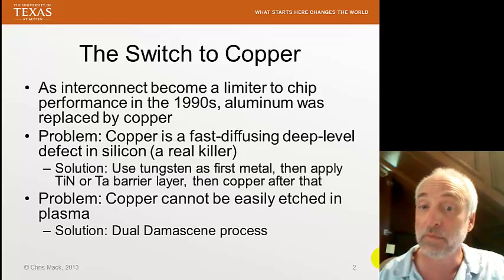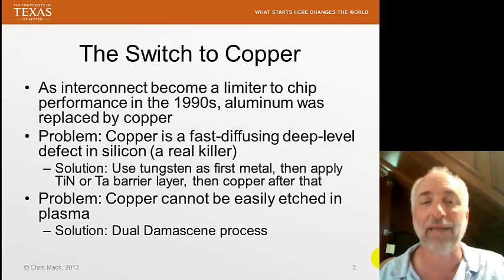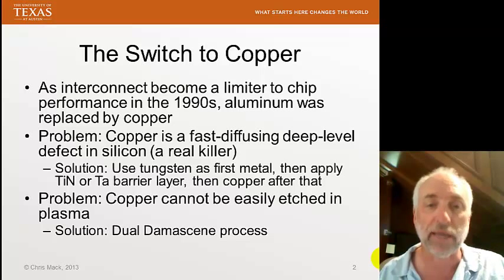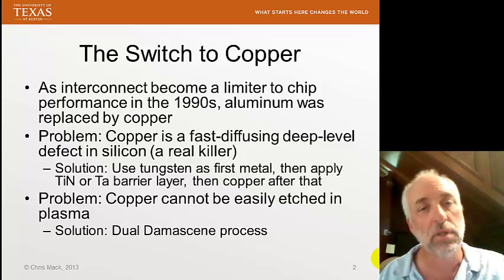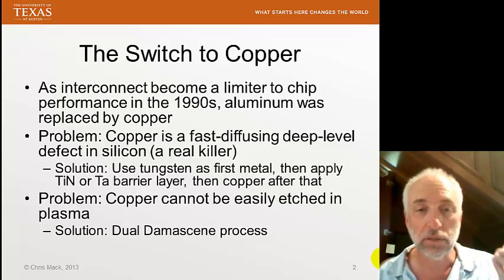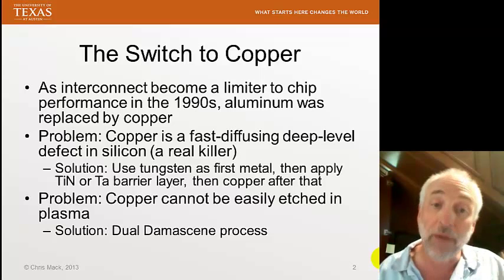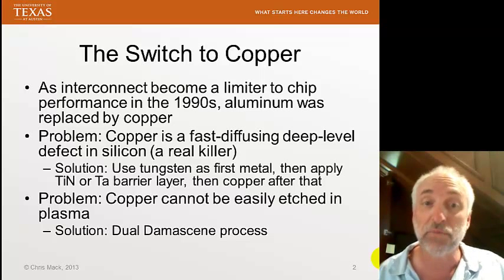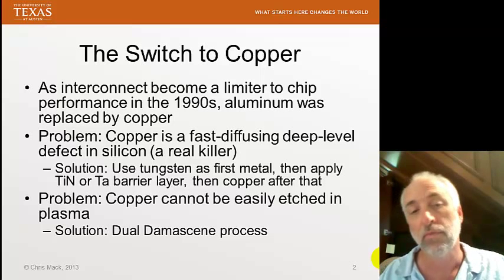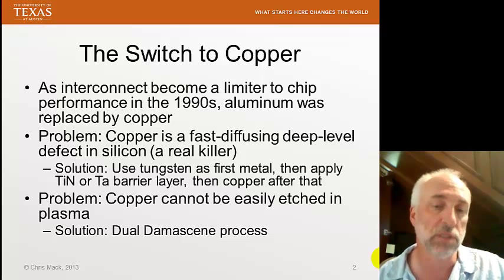The other problem with copper is that it's hard to etch. We can etch copper in a wet-acid kind of material, but copper is not easily etched in a plasma etching system. We use plasma to generate ions that are very reactive with the material we're trying to etch. The problem is not the reaction — it's that the reaction products are not volatile, and therefore they don't come off, and therefore we can't etch. Our solution is to use the dual damascene process, which is the subject of our discussion today.